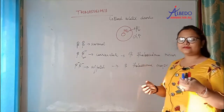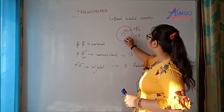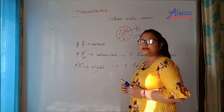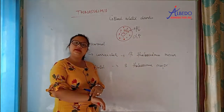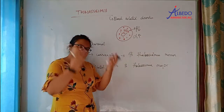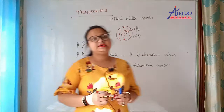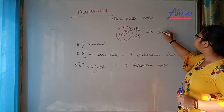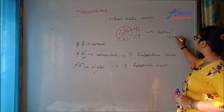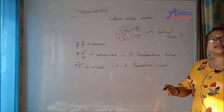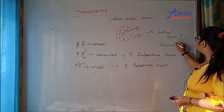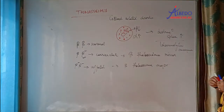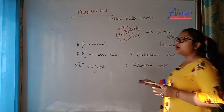Due to the reduced globin chain, in RBCs it becomes dense aggregates. These aggregates change the RBC's oxygen-carrying capacity and shape and size. So what will happen? There will be destruction of RBCs in the spleen. This person will also suffer from hemolytic anemia. This is all about thalassemia.